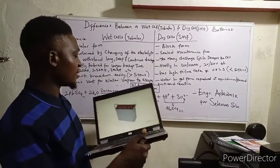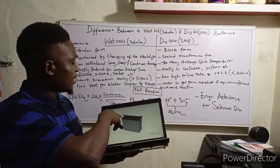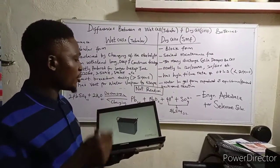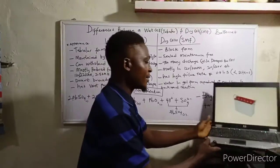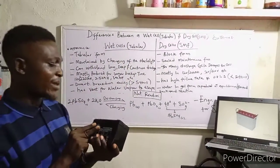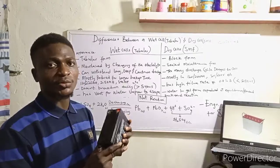This is what the wet cell battery looks like. It has vents for water vapor to escape. And this is a good example of a dry cell battery. It's called a dry cell battery because it is sealed, maintenance-free, with no place to open to put water or remove water.